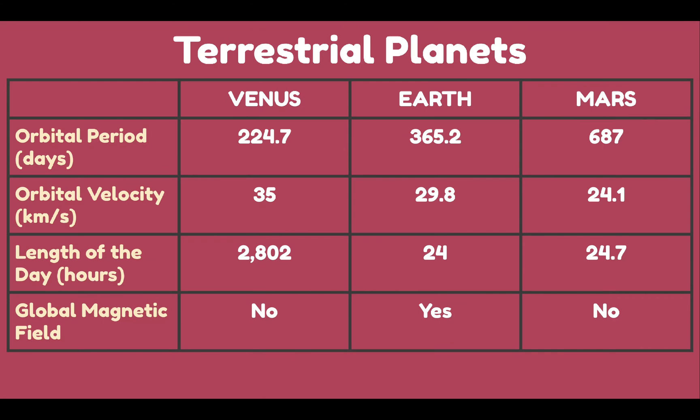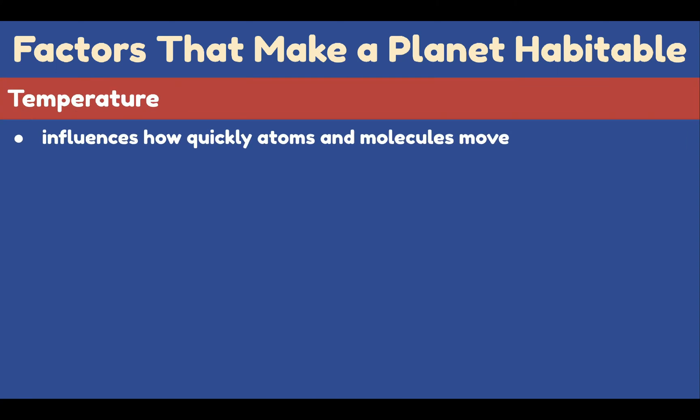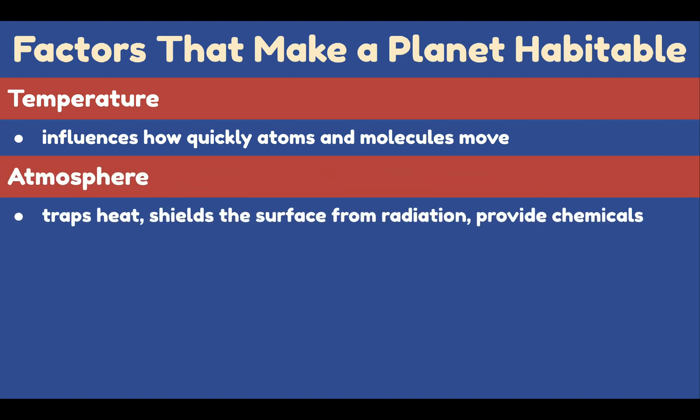Now let's discuss the factors that make planets habitable. There are four: First is temperature, which influences how quickly atoms and molecules move. Second is atmosphere, which traps heat, shields the surface from harmful radiation, and provides chemicals needed for life such as nitrogen and carbon dioxide. Planets should have sufficient size to hold a significant atmosphere. The composition of the atmosphere, specifically the amount of greenhouse gases, influences the planet's surface temperature.